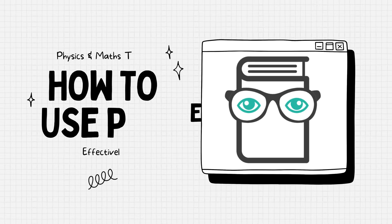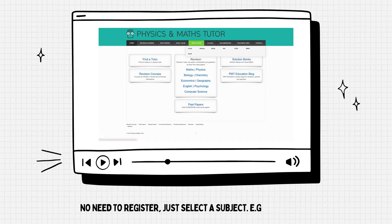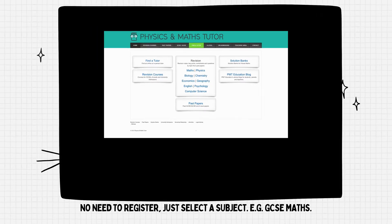There are millions of free revision resources online, but it's all about how you use them. Physics and Maths Tutor, launched in 2019, offers loads of free study materials for GCSE and A-level students.